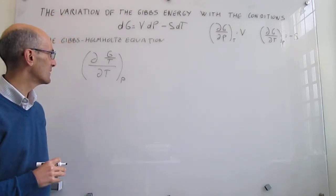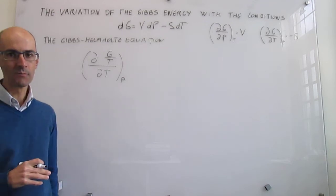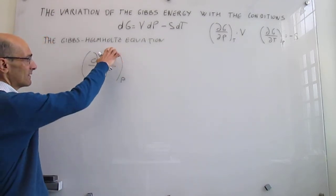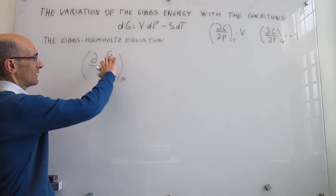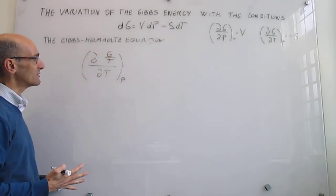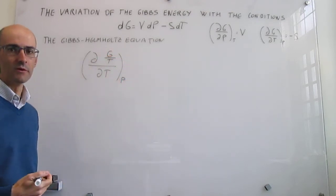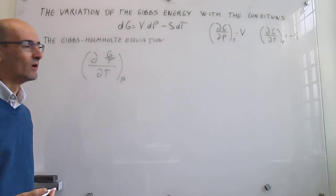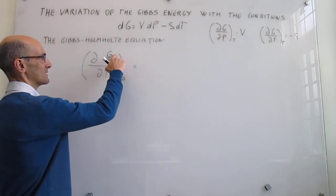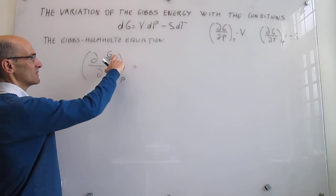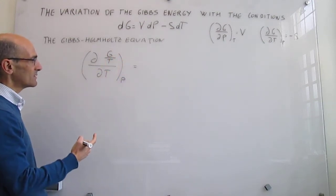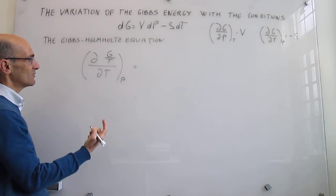So that's what we're going to try to do right here in this video. Notice that what we have to do is take the first derivative of two functions — Gibbs energy and 1/T — so we're going to invoke the product rule of first derivatives. This is going to be a function G and a function 1/T.